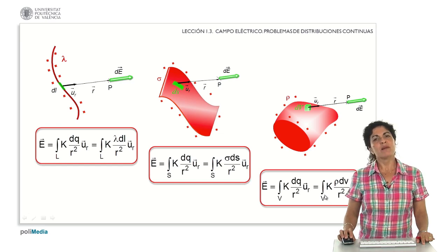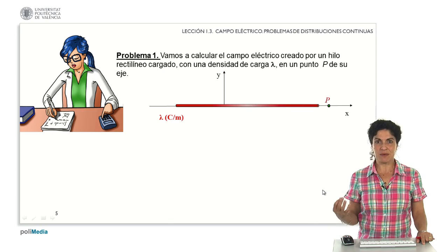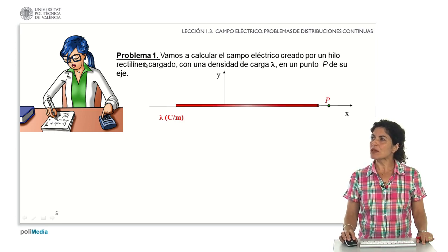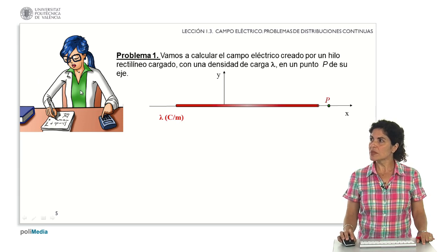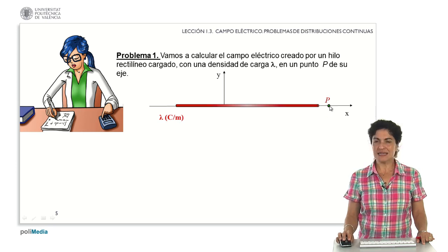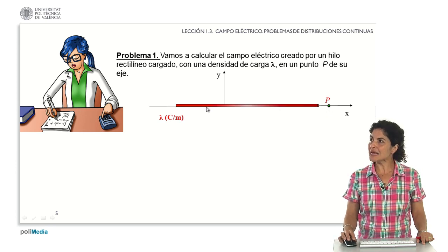We are going to analyze different configurations to establish the guidelines for solving this type of problem. In a first example, we are going to calculate the electric field created by a rectilinear wire charged with a longitudinal charge density lambda at a point P on its axis. We have a body charged with a constant longitudinal charge density lambda C per meter, and the point we study is on the axis of the charge distribution.